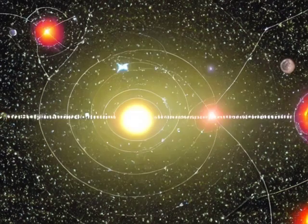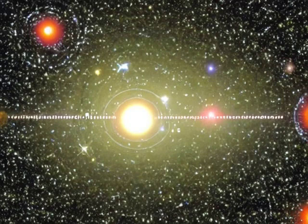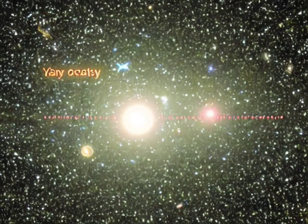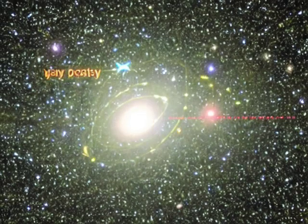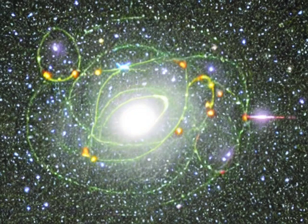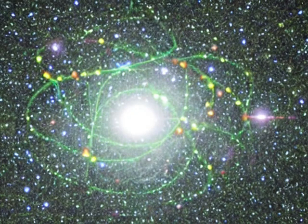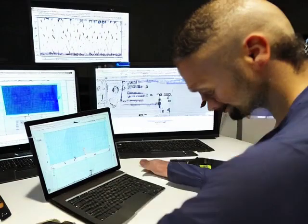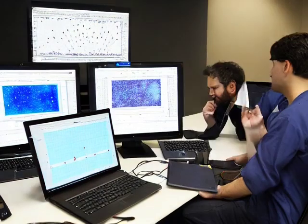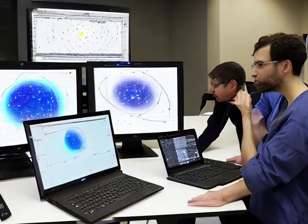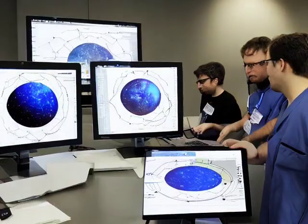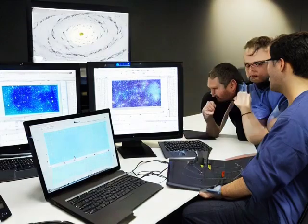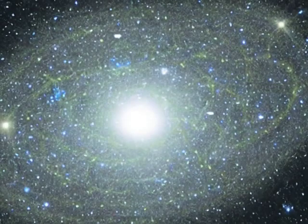This discovery of the closest black hole to Earth is exciting for astronomers as it opens up a new way of detecting and characterizing black holes in binary star systems. The team of astronomers led by Kareem El-Badri has paved the way for numerous similar discoveries. Moreover, the properties of the binary star system that was discovered are unexpected, which highlights the gap in astronomers' understanding of how such systems form in the first place. This discovery is a significant milestone in the field of astronomy and will pave the way for further discoveries in the future.